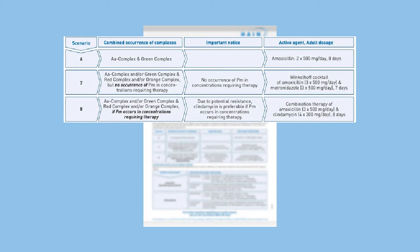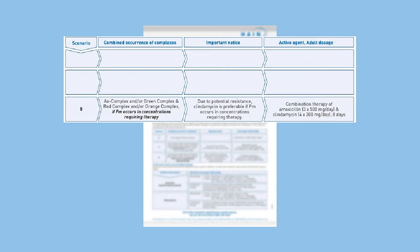Depending on the clinical picture, treatment consists in general of mechanical intervention such as scaling and root planning, and if necessary, the adjuvant administration of antibiotics. In our example of scenario 8, a combination treatment of amoxicillin and clindamycin is advised, in addition to a mechanical treatment.